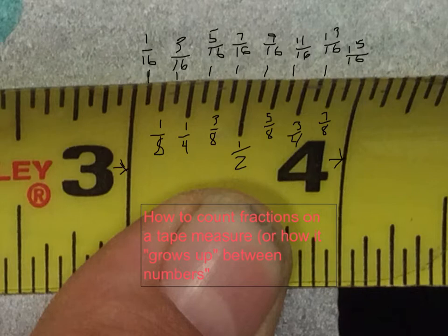as you can see, I've only labeled the teeniest marks as sixteenths, the next smallest marks as eighths, the next smallest as fourths, one of the largest marks, the one in the middle, as a half, and then the largest marks on the ends are our whole numbers 3 and 4.